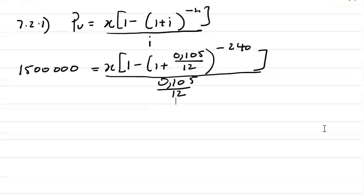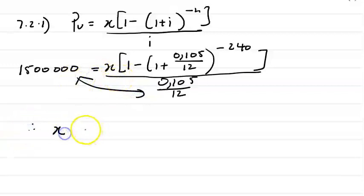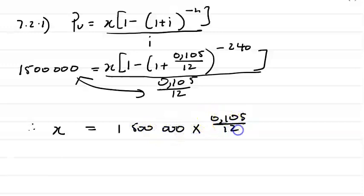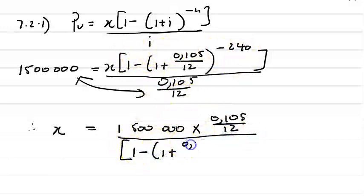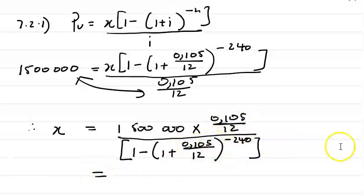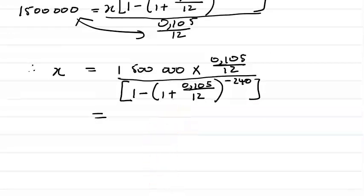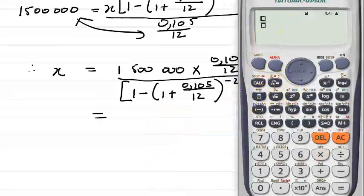From here we are going to make x the subject of our equation, so we need to cross-multiply. Therefore x is equal to 1.5 million times 0.105 over 12, divided by the bracket 1 minus (1 + 0.105/12)^(−240). Let's put that in our calculator to find the monthly installment: 1.5 million times 0.105 over 12.